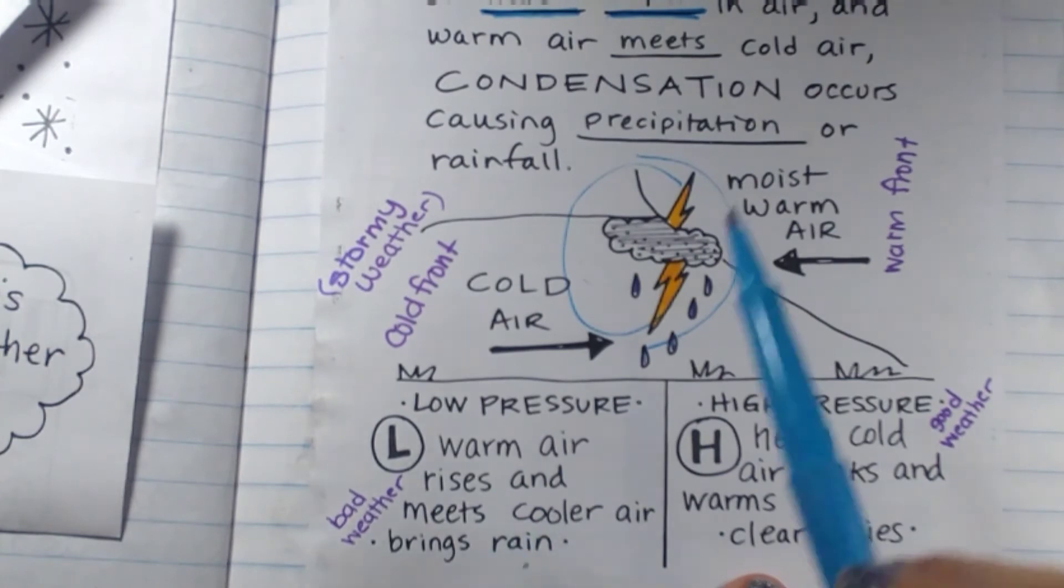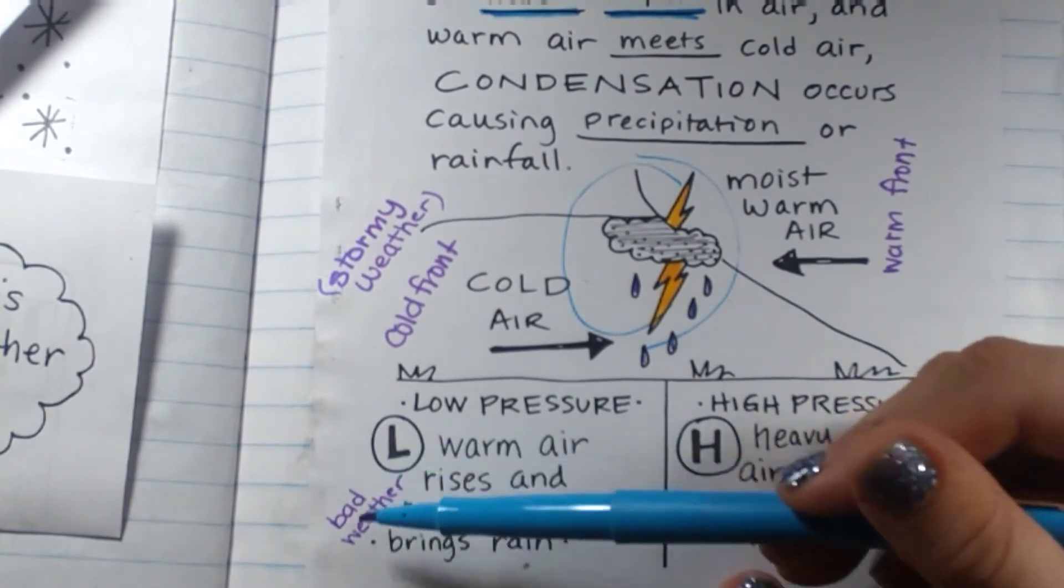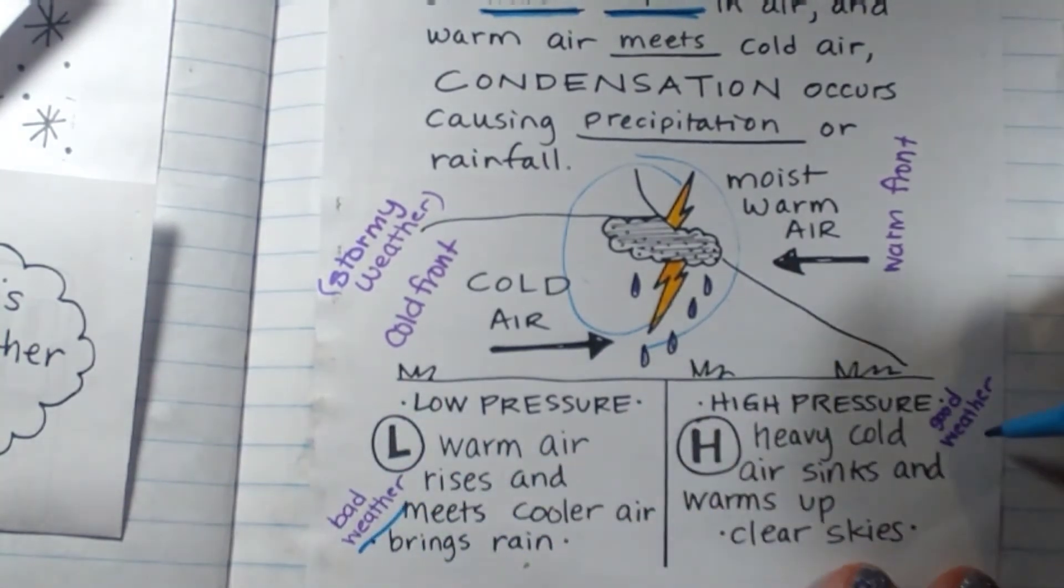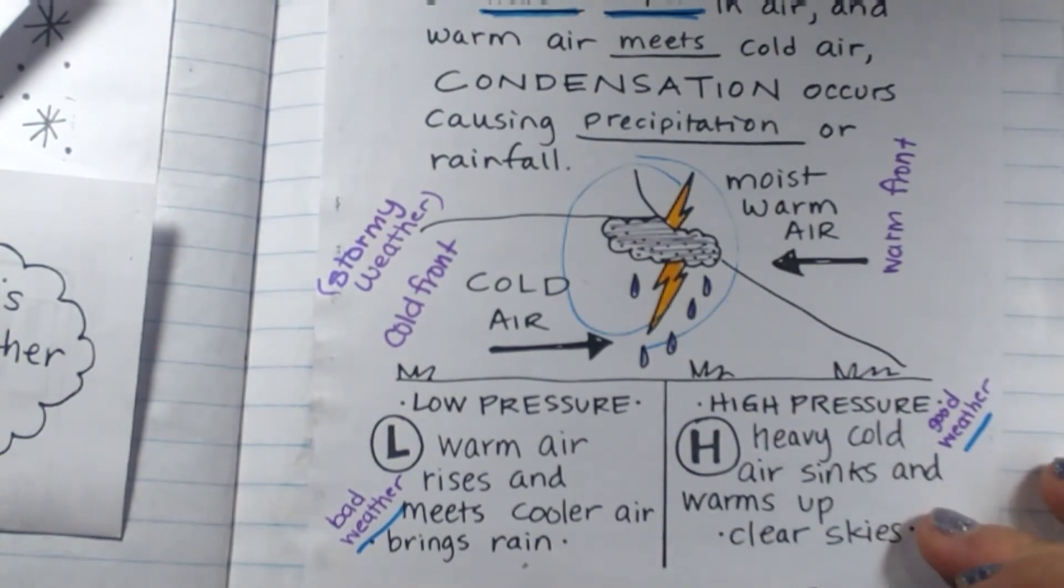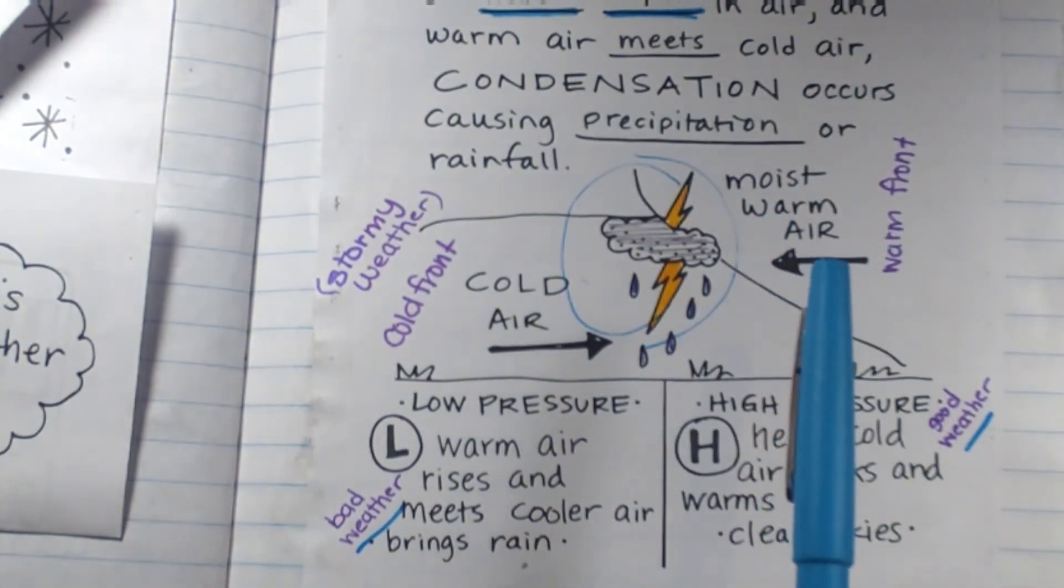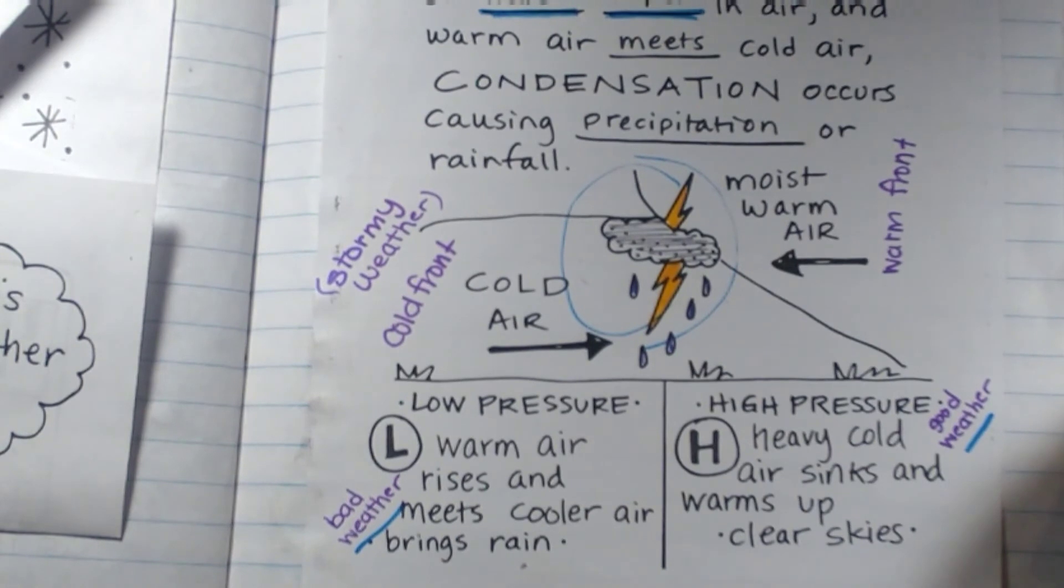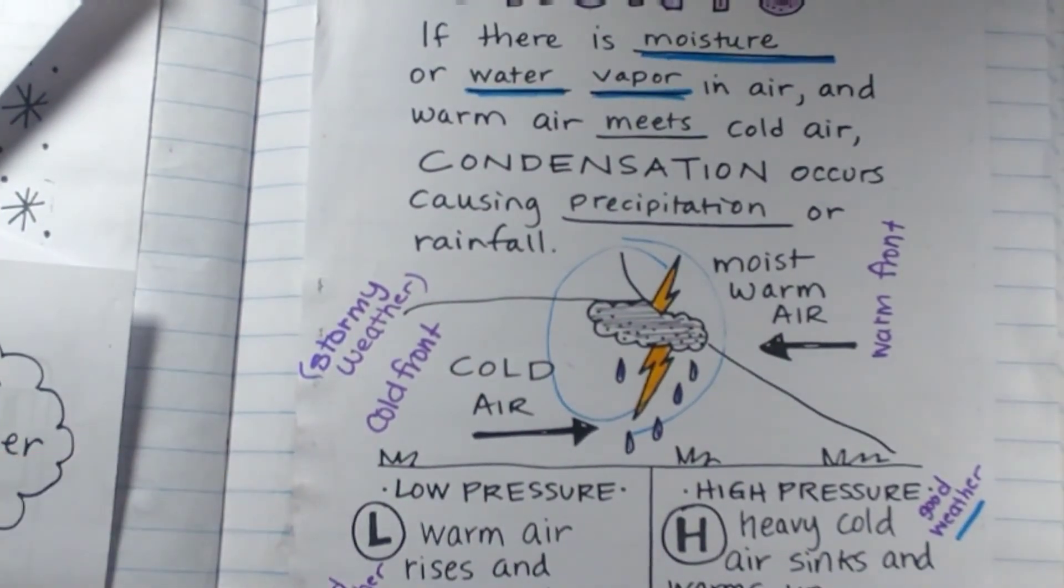That's why a low pressure system brings bad weather and a high pressure system brings good weather. Because a high pressure system is when cold air goes down to warm air, which does not result in condensation. So that is understanding cold fronts, low pressure systems, and high pressure systems.